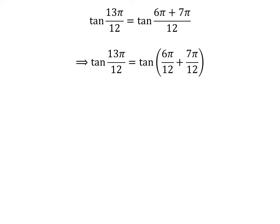The fraction can be expressed as a sum of two fractions. So, tangent of 13 times pi upon 12 is equal to tangent of 6 times pi upon 12 plus 7 times pi upon 12. Cancelling out the common factor in the numerator and the denominator in each fraction gives us tangent of 13 times pi upon 12 is equal to tangent of pi upon 2 plus 7 times pi upon 12.